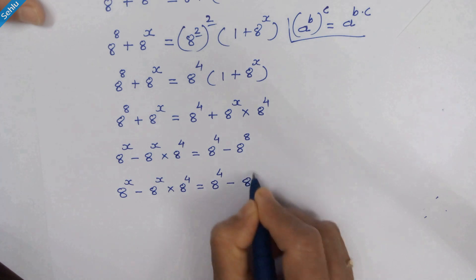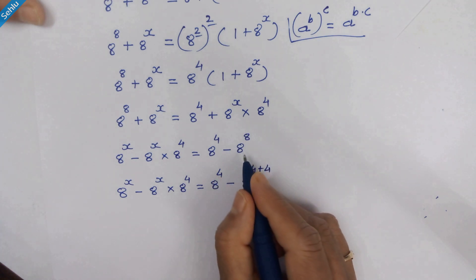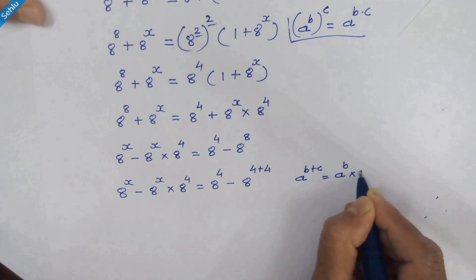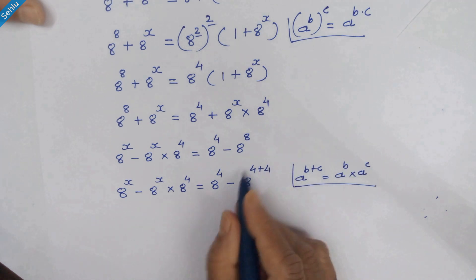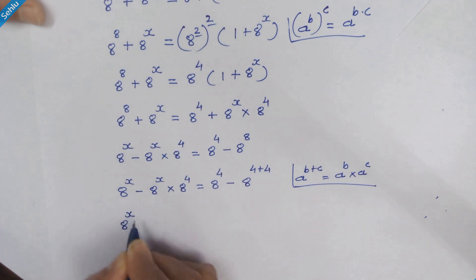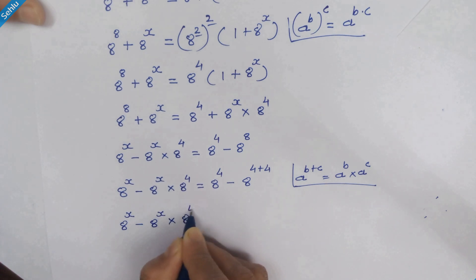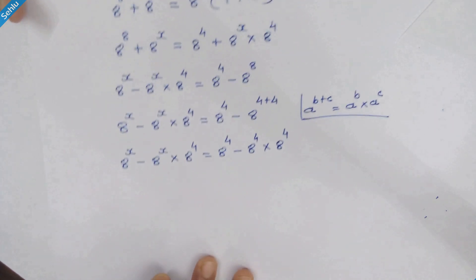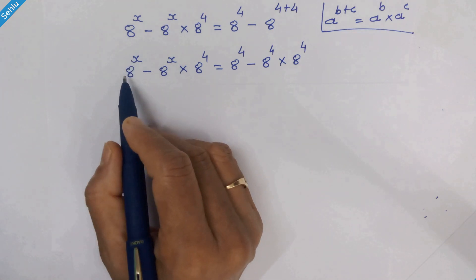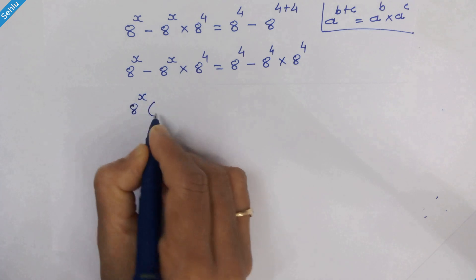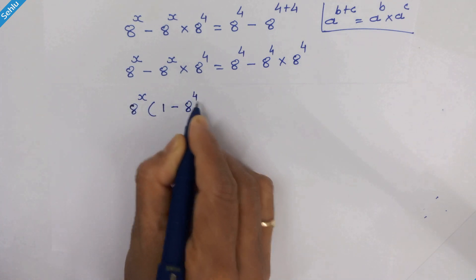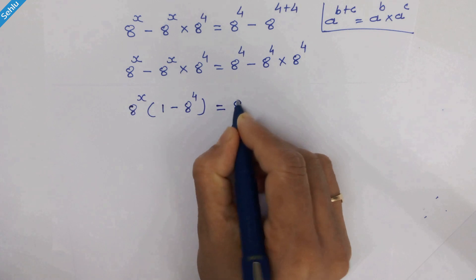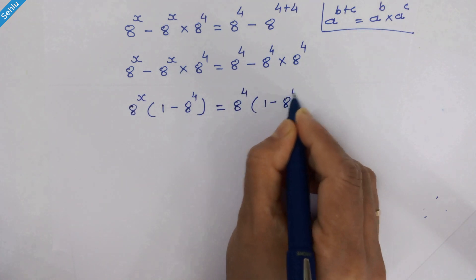We can write 8 raised to 8 as 8 raised to 4 plus 4, and since a raised to b plus c equals a raised to b times a raised to c, this becomes 8 raised to 4 times 8 raised to 4. Factoring out 8 raised to x on the left gives 8 raised to x times 1 minus 8 raised to 4, and factoring out 8 raised to 4 on the right gives 8 raised to 4 times 1 minus 8 raised to 4.